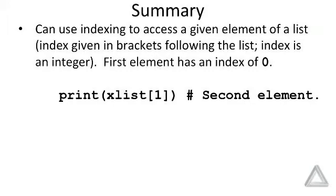So think of that index as the offset from the beginning of the list. And in this example here we're just saying print xList with an index of one. So that would be the second element of xList.